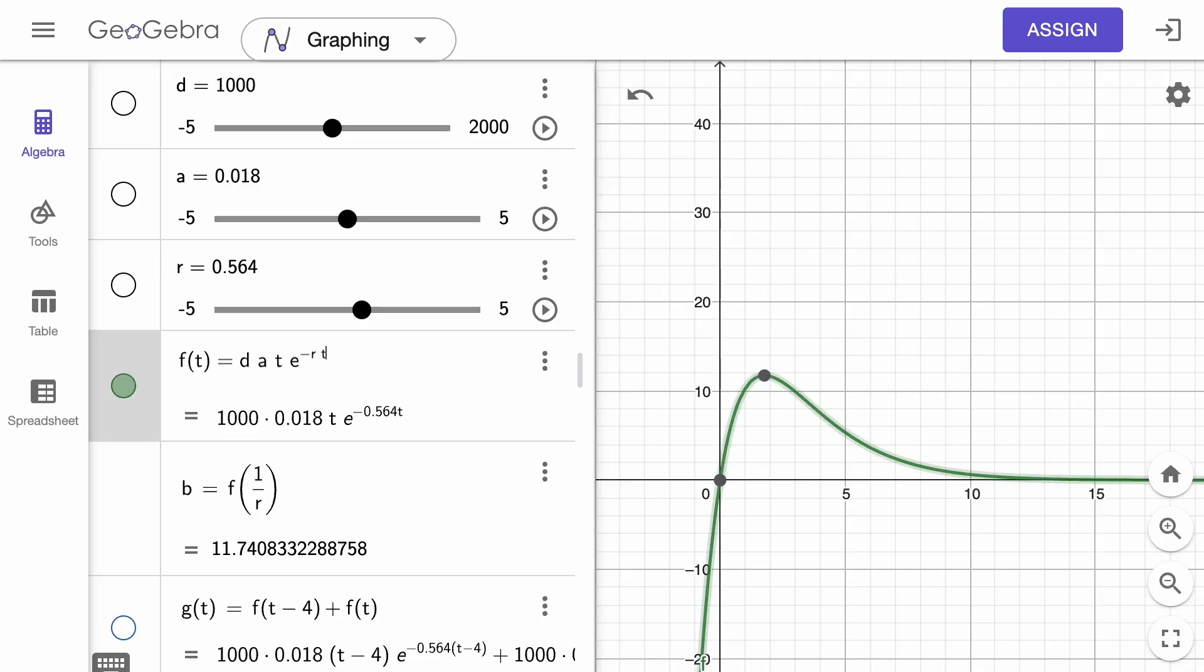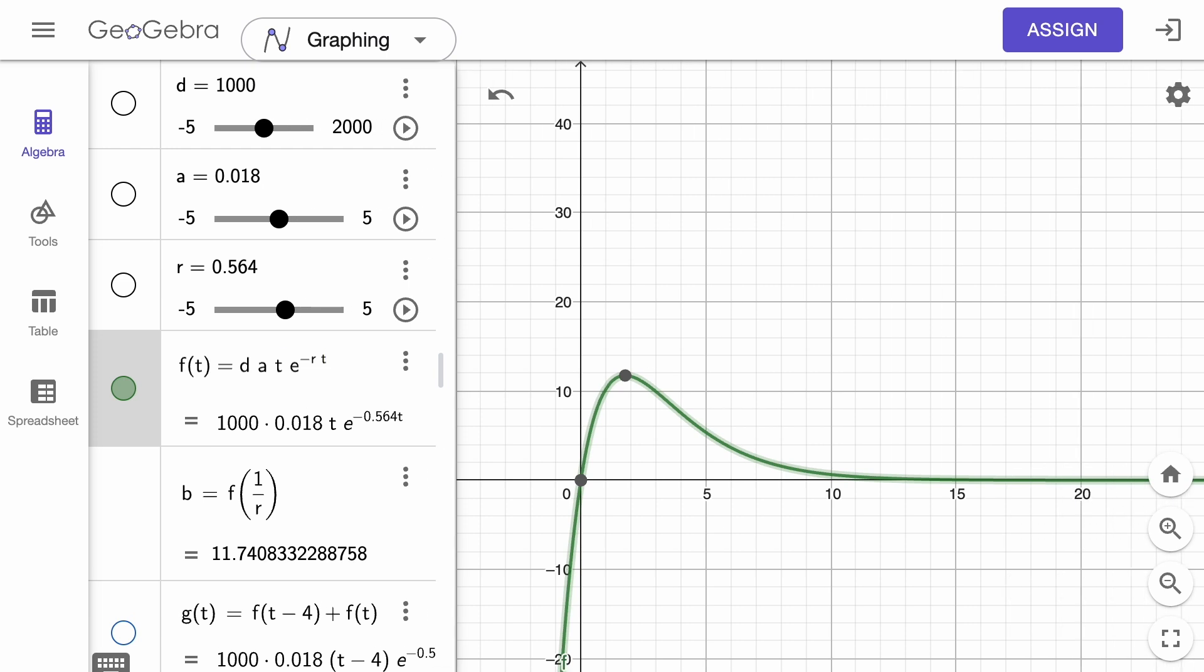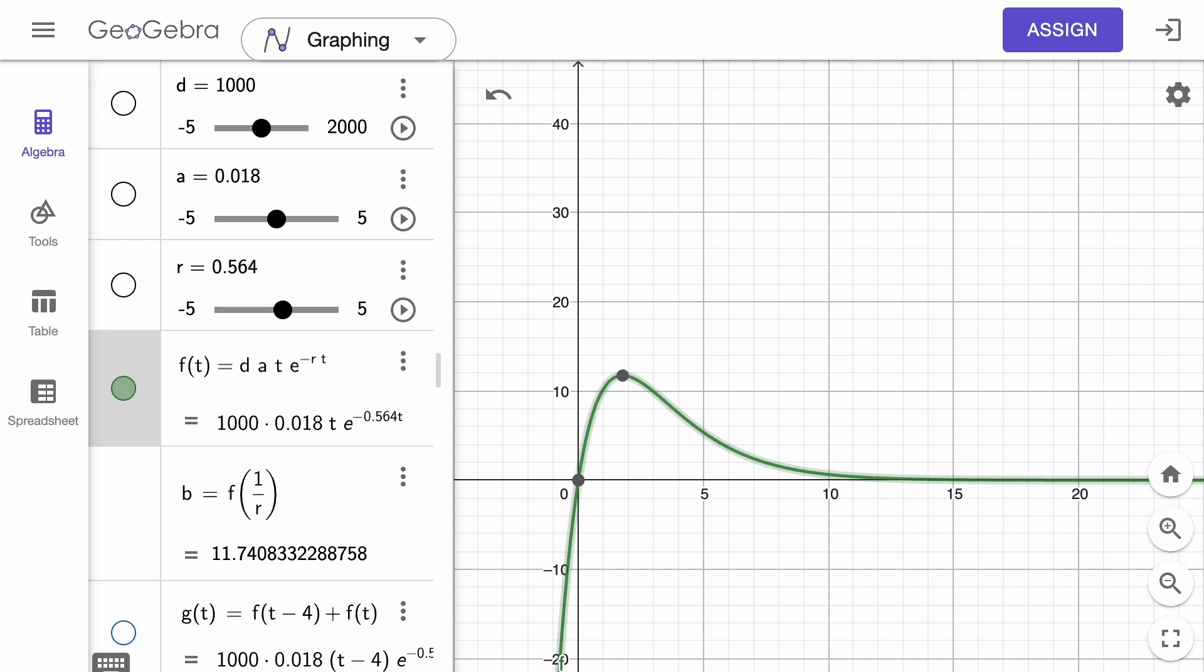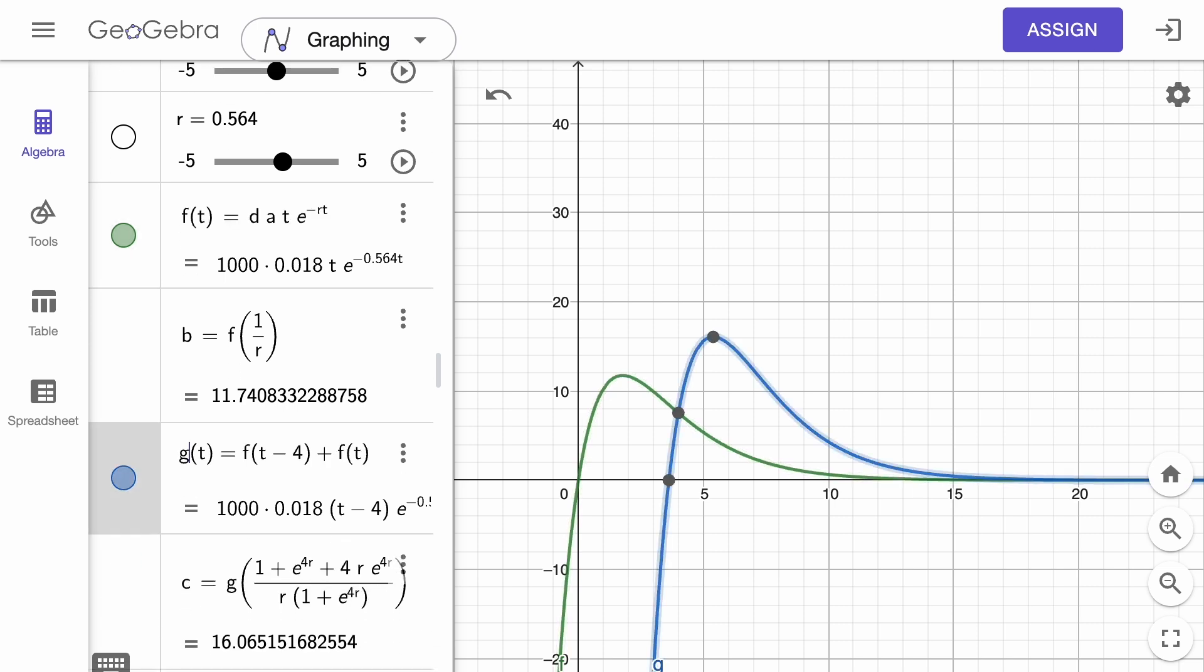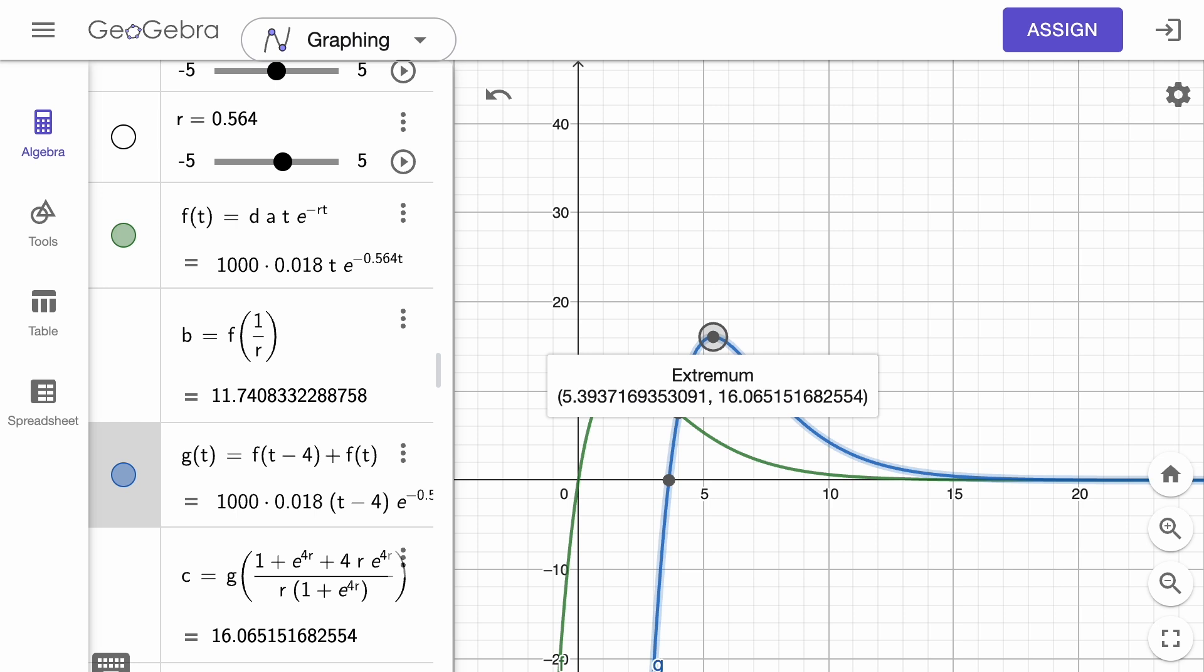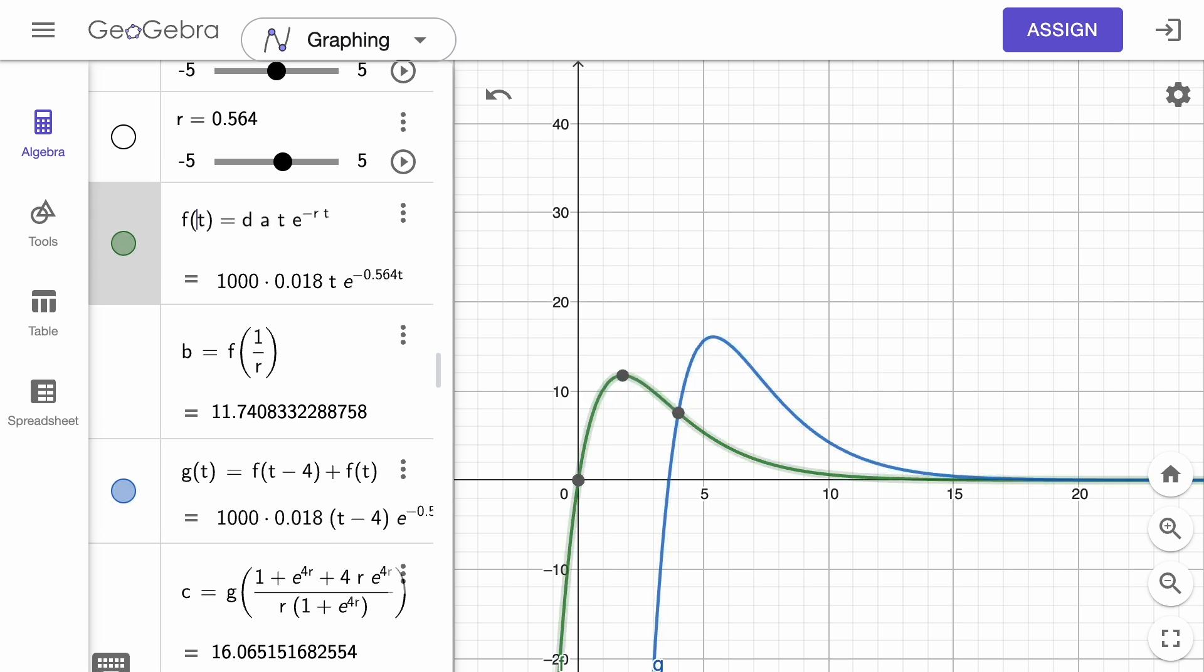This is a function that approximates the blood concentration of Tylenol after taking 1,000 milligrams in pill form. After 4 hours, the blood concentration will be the new function, shifted over 4 hours, and then added to the amount in the blood from the previous dose. We can represent that as F of T minus 4 plus F of T.